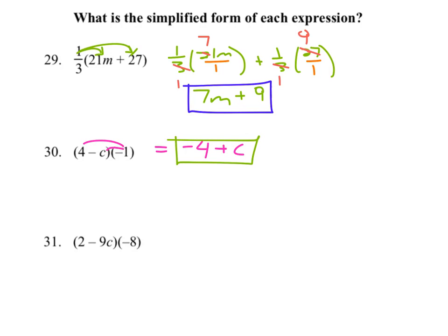And finally, we're going to distribute this negative eight to both of these parts. So negative eight times two, negative 16. And negative eight times negative nine C. Negative times negative is positive. Eight times nine is 72. So 72 C.